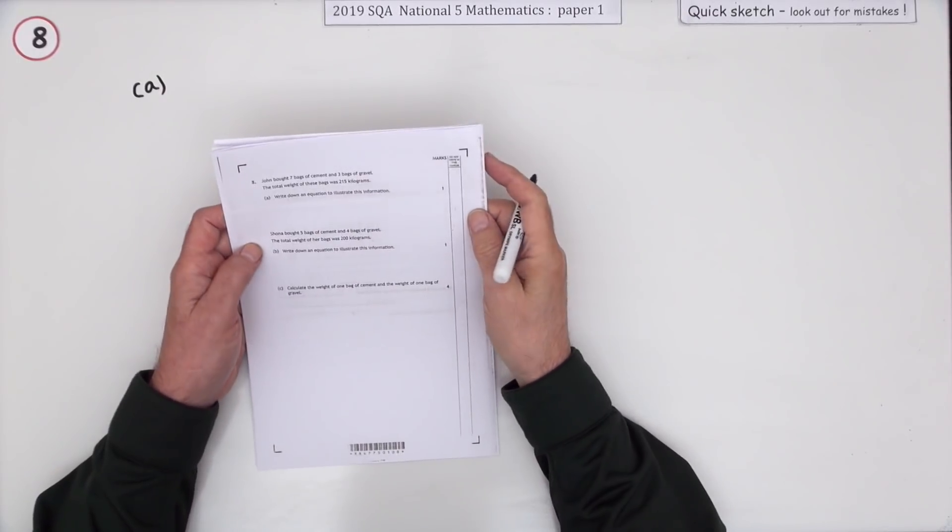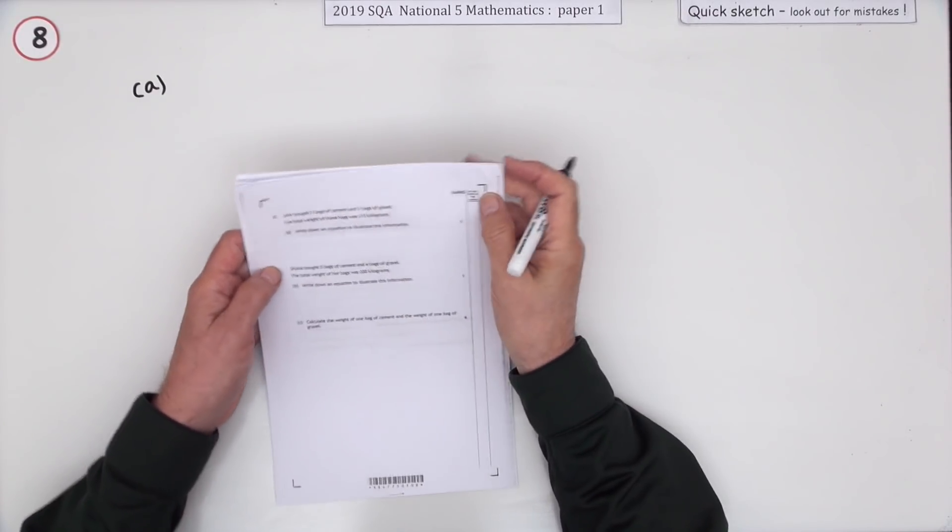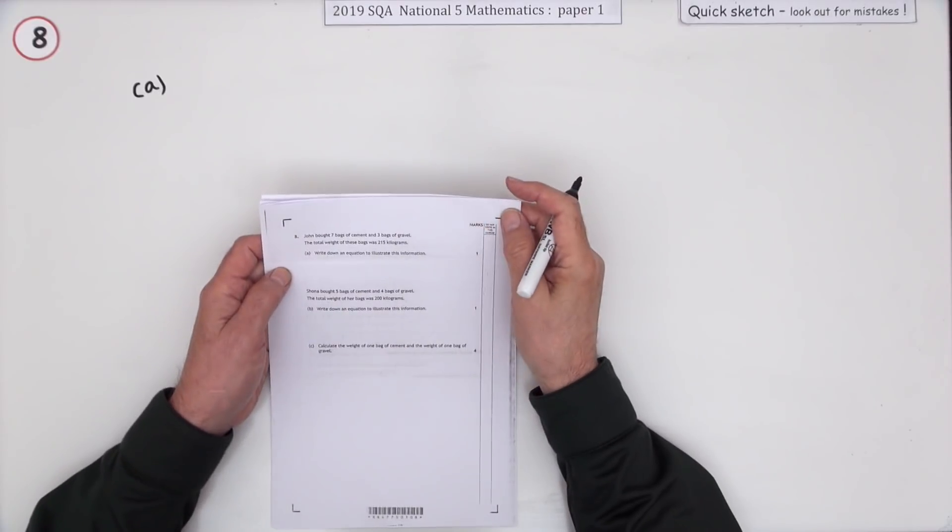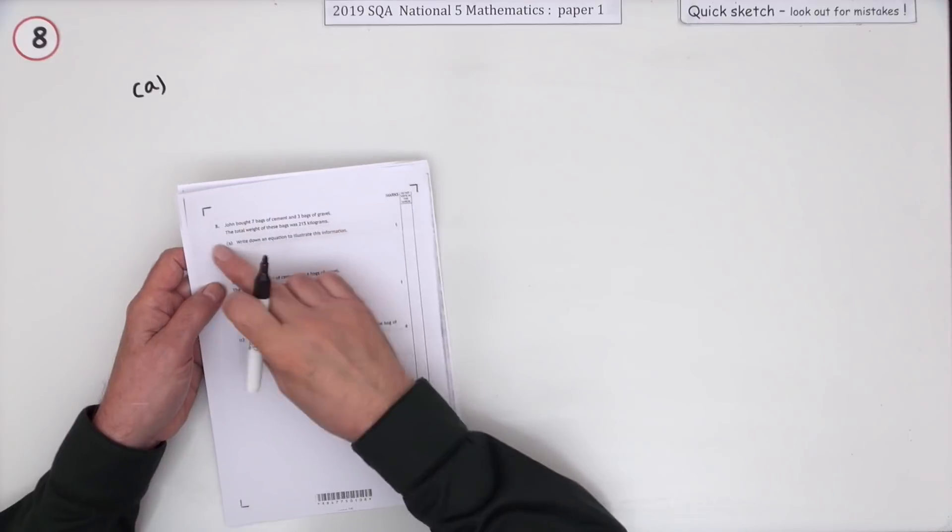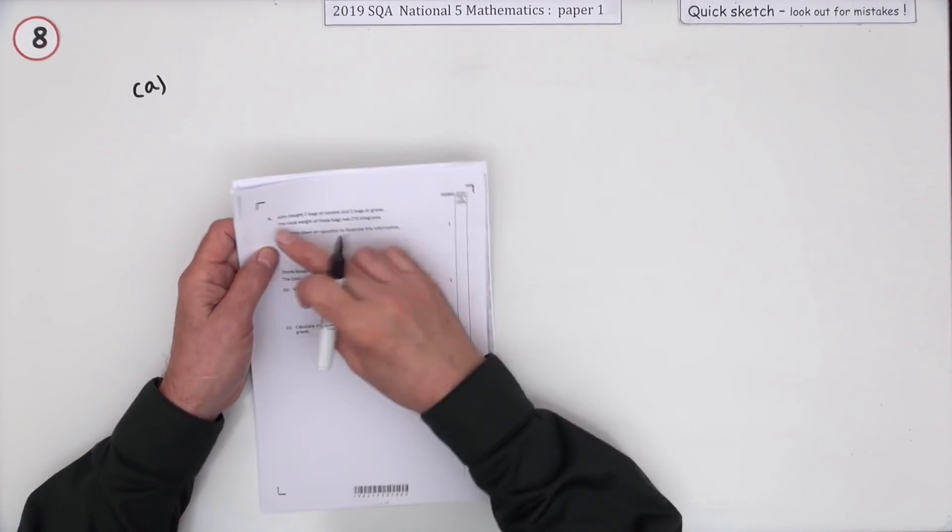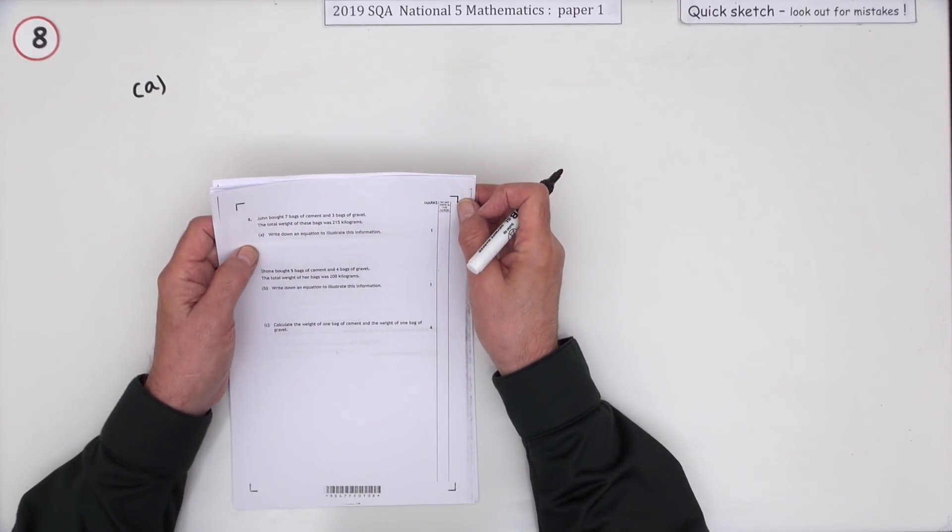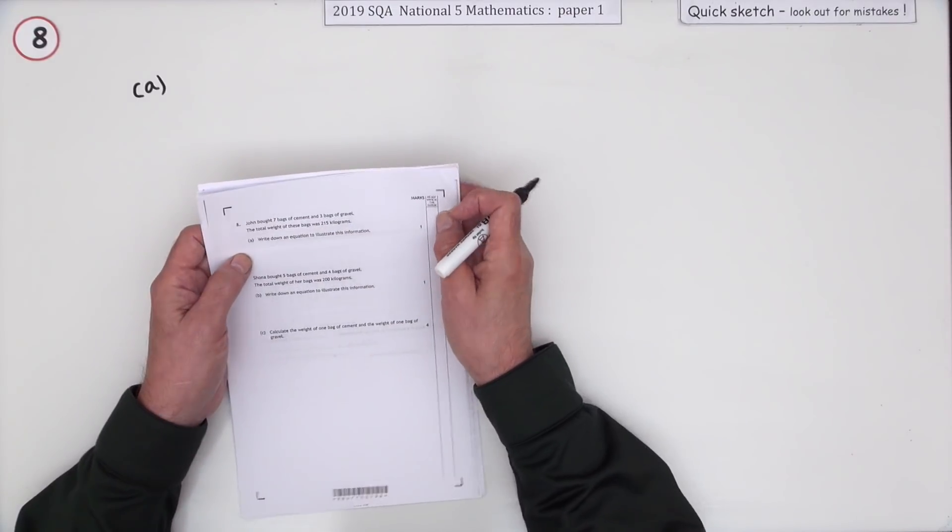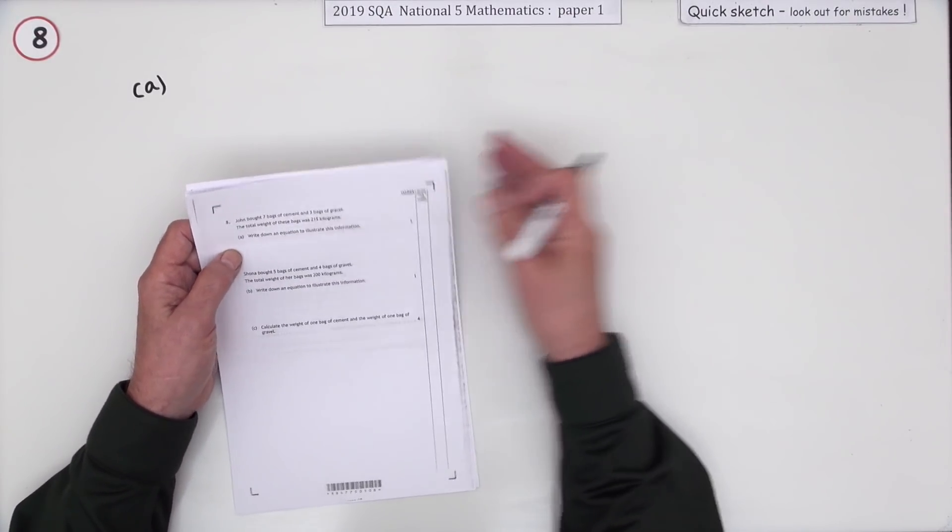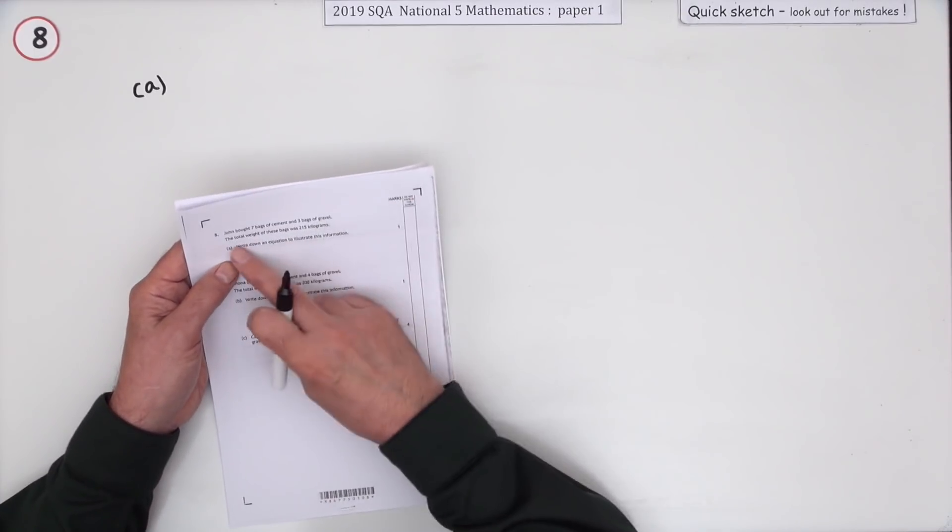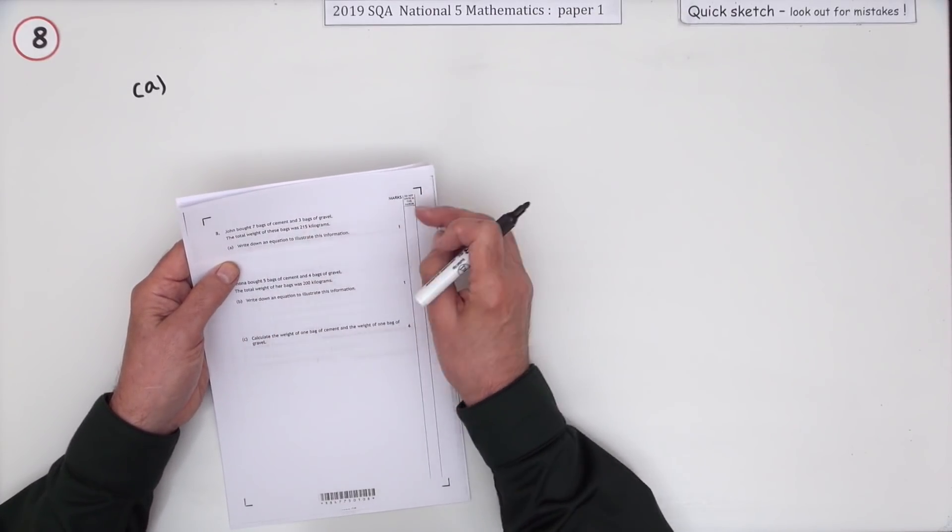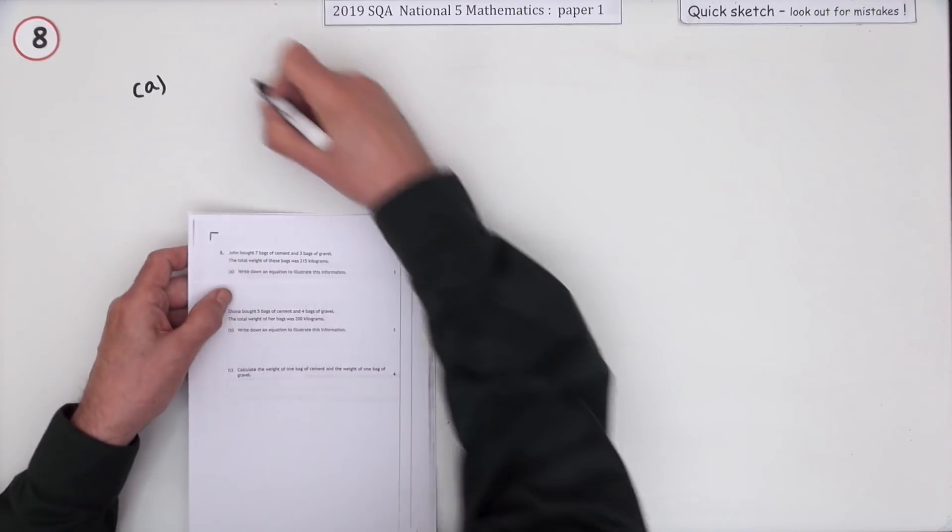Number eight then - six marks here and it looks like the simultaneous equations question. A wee story, so I'm not writing this down. It tells you anyway to write down the equation: John bought seven bags of cement and three bags of gravel. The total weight of these bags is 215.